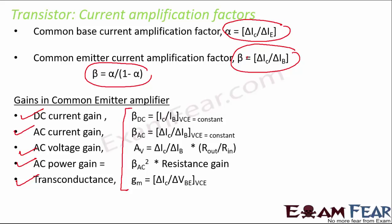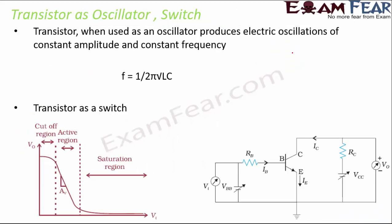A transistor can also act as an oscillator or a switch. When used as an oscillator, it produces electric oscillations of constant amplitude and constant frequency. The frequency is given by f = 1 / (2π√LC), where L is the inductance and C is the capacitance.